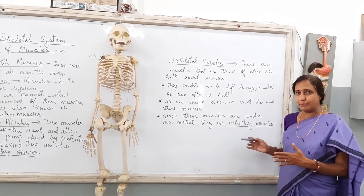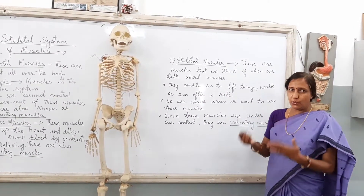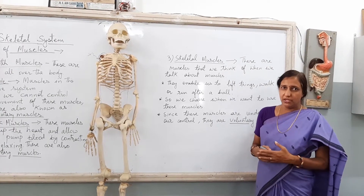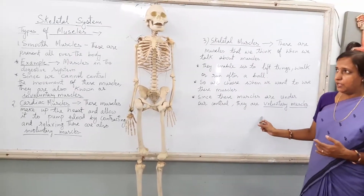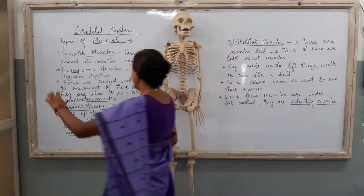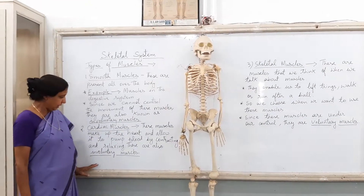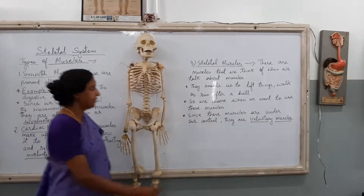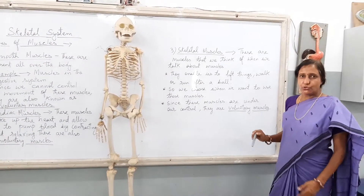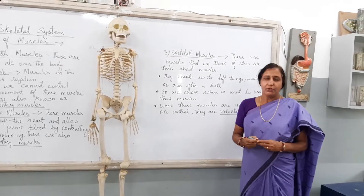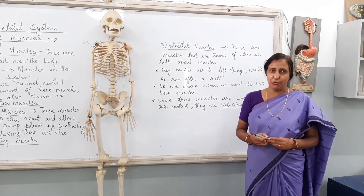This muscle is called voluntary muscles because it is in your control — whenever you wish to work with this kind of muscle, you use it. So you have known the difference between involuntary muscles and voluntary muscles. In all, we come to know that smooth muscles and cardiac muscles are involuntary muscles, and skeletal muscles are voluntary muscles. I hope you understand this well through this video. Thank you for now. Have a safe stay at home. Thank you.